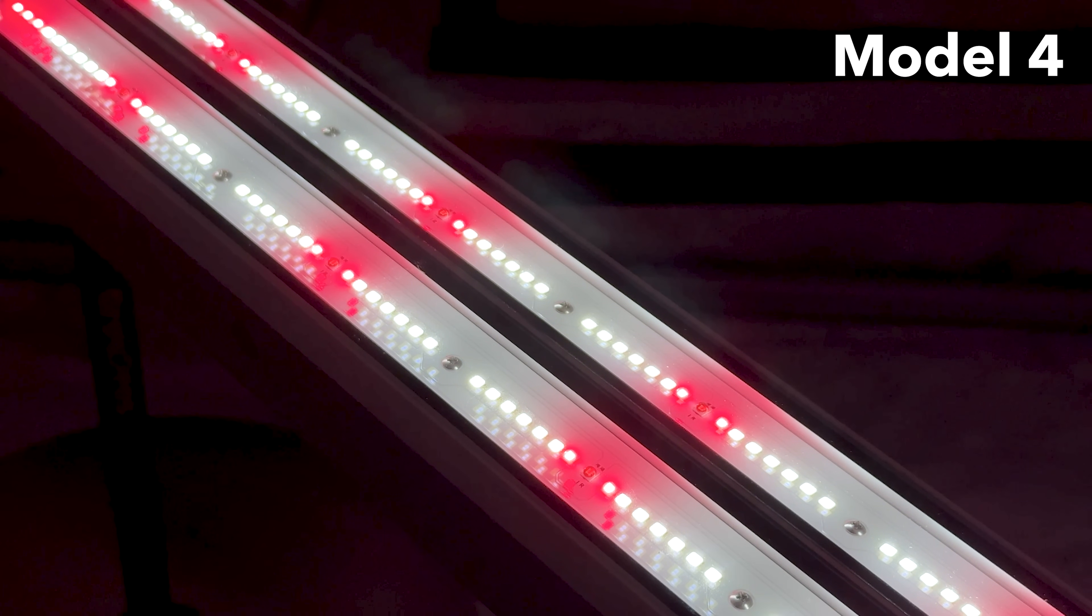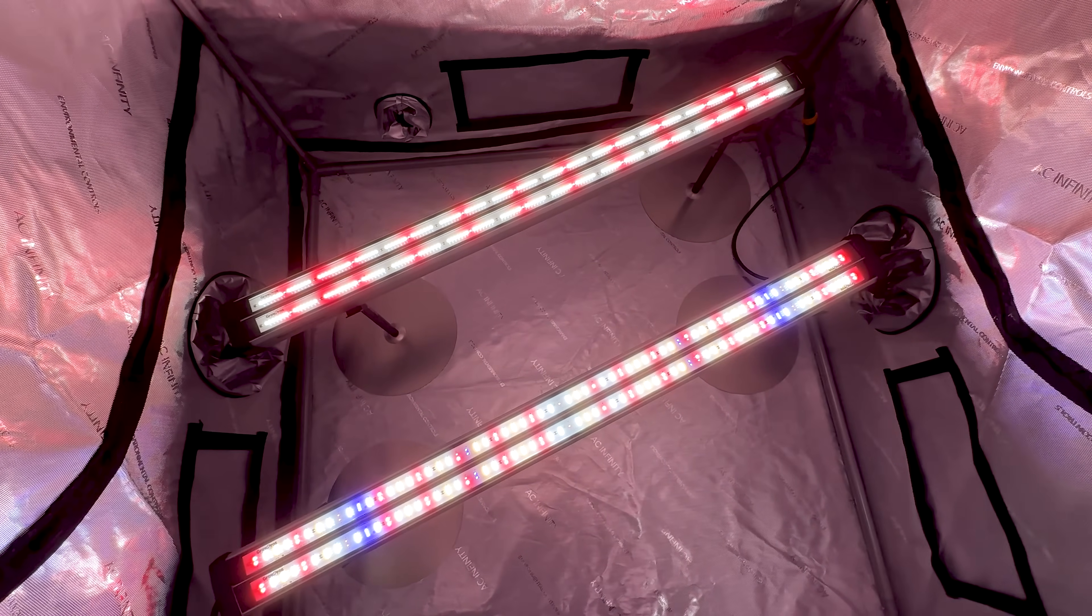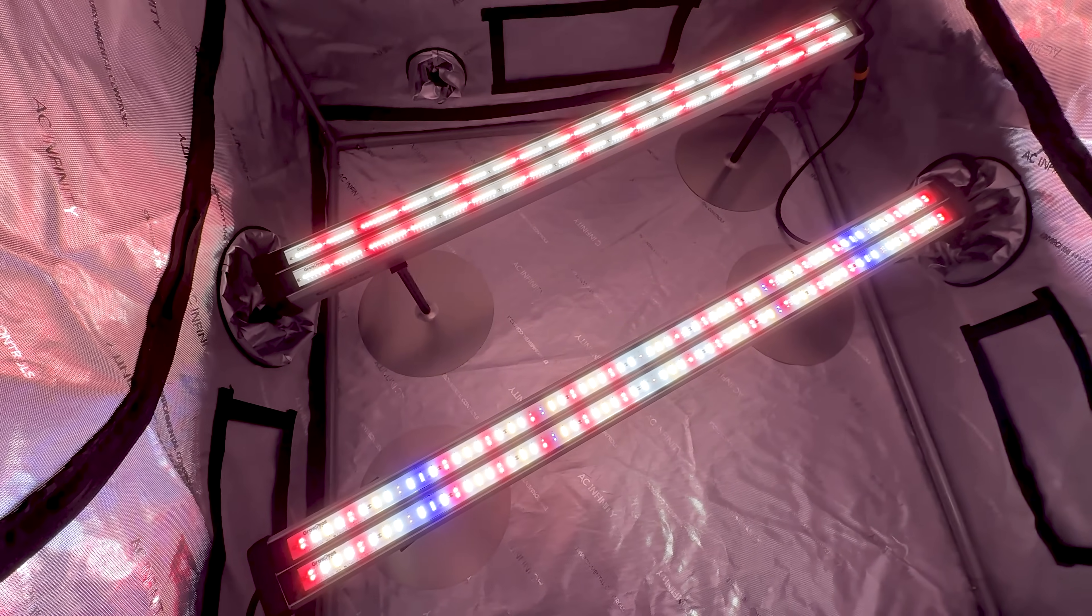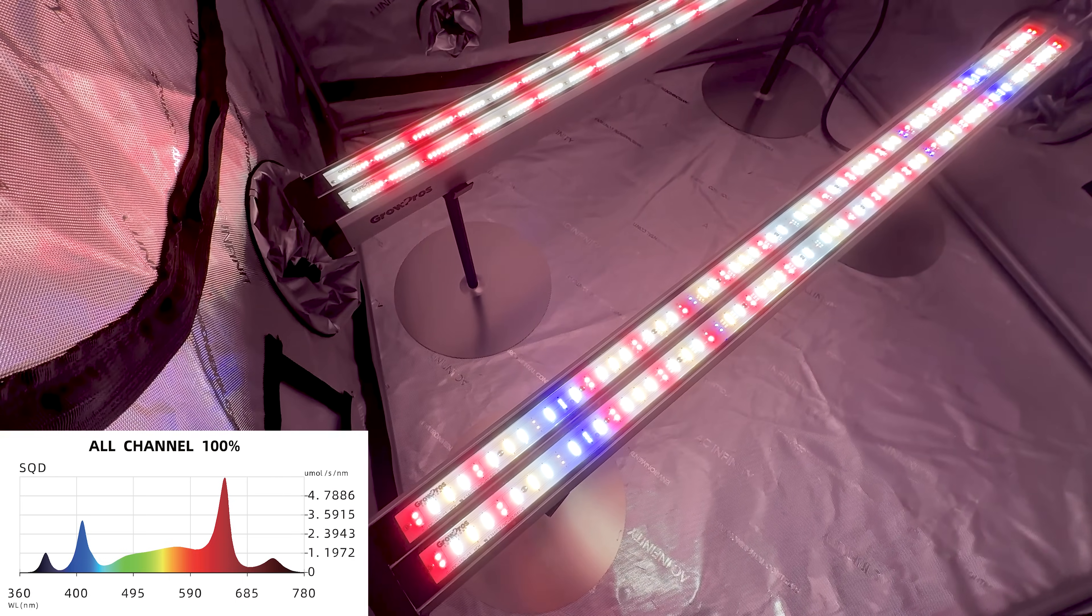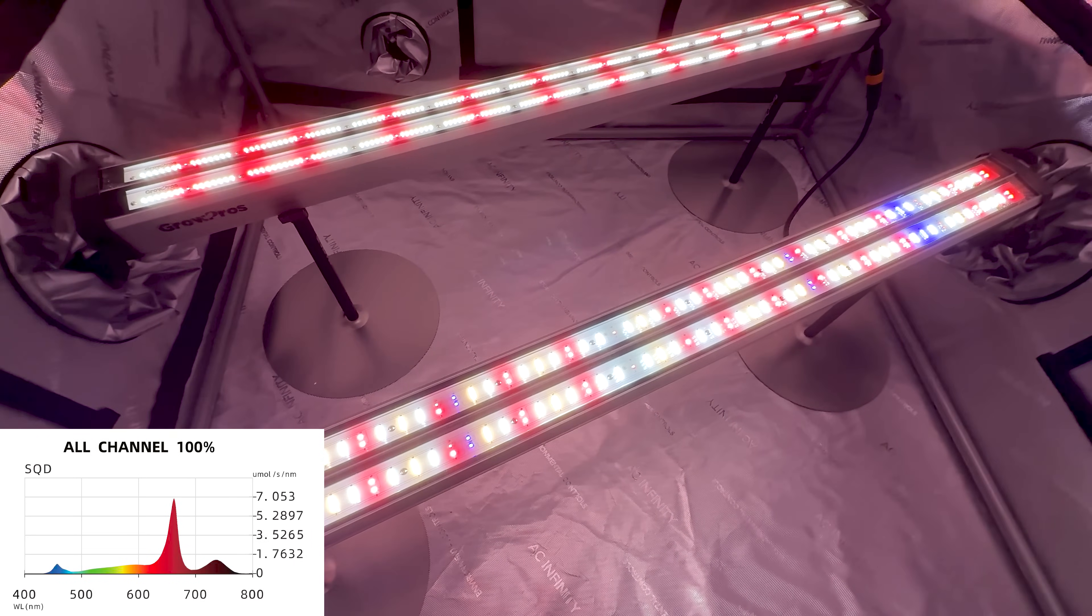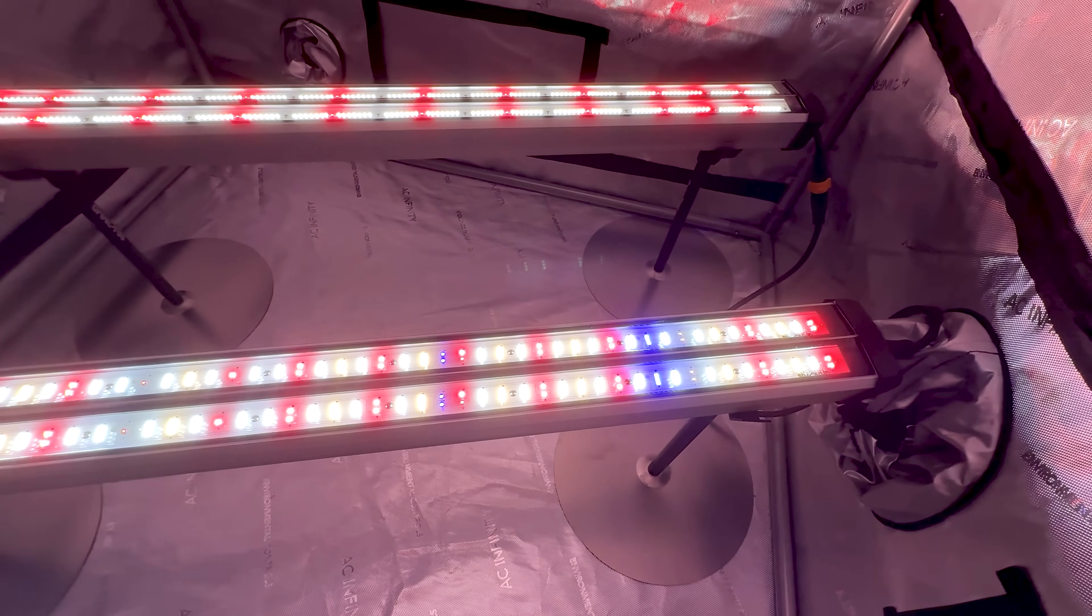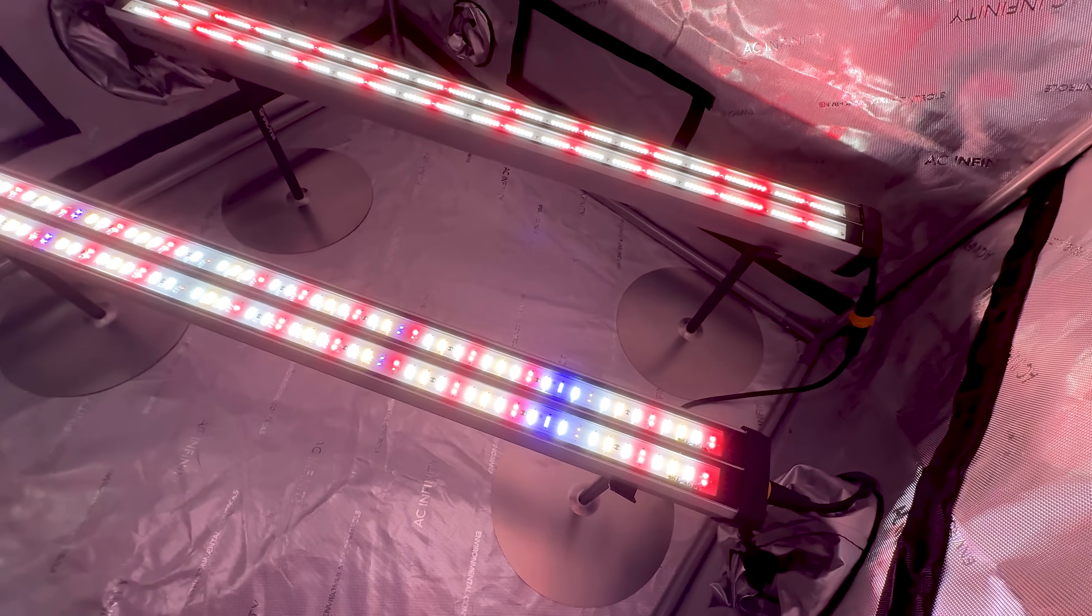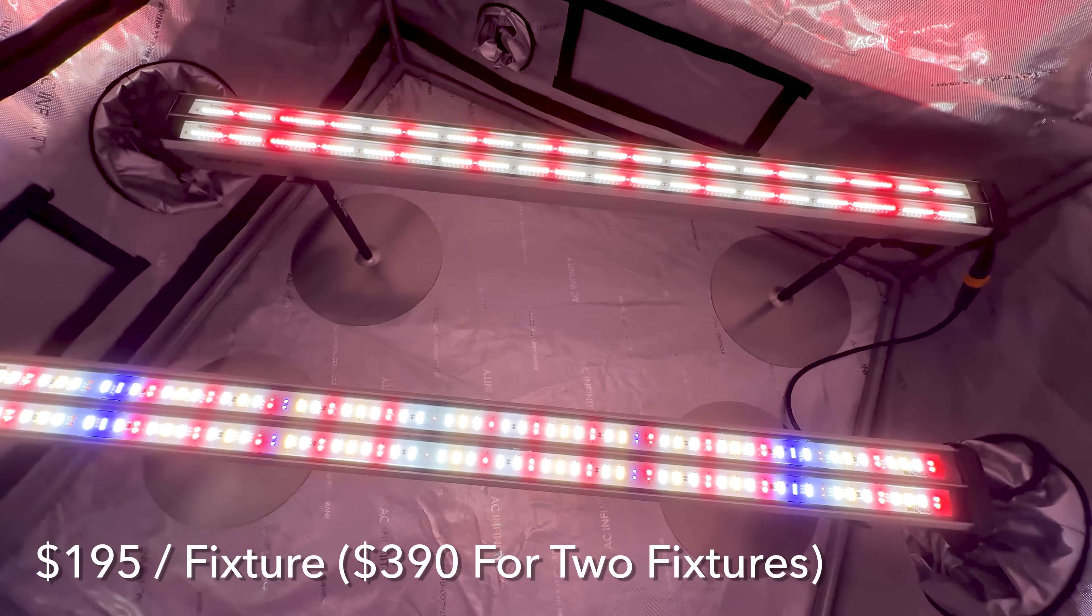So, in conclusion, the Grow Pro's 4 foot 150 watt dual channel under canopy grow lights represent a leap forward in supplemental lighting. Whether you choose the Model 3 for its all-in-one versatility or Model 4 for its flower-boosting red and IR spectrum, these lights are a smart investment for serious growers looking to maximize yields and improve quality. The Model 3 and 4 4 foot lights retail at $195 per fixture.